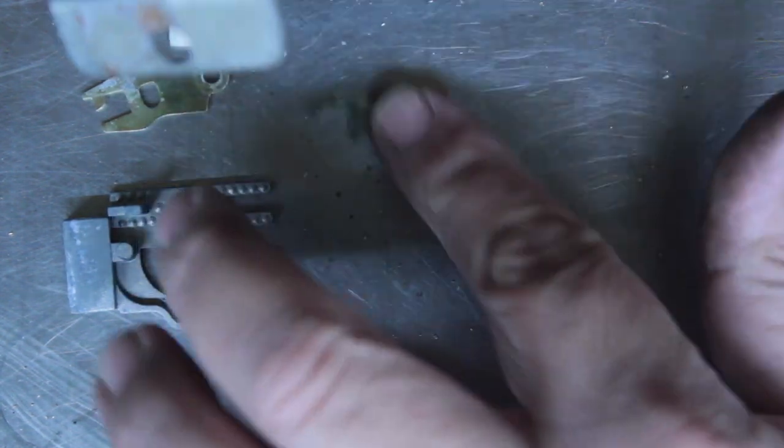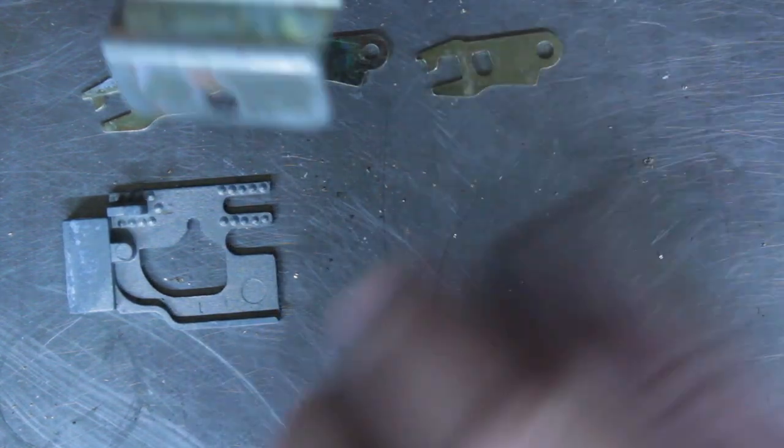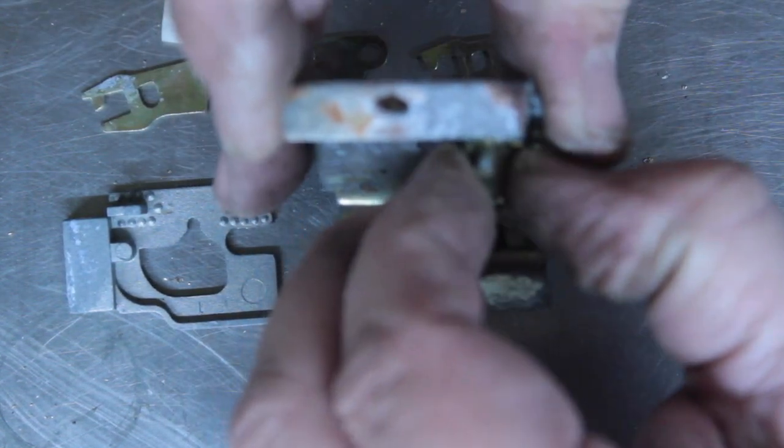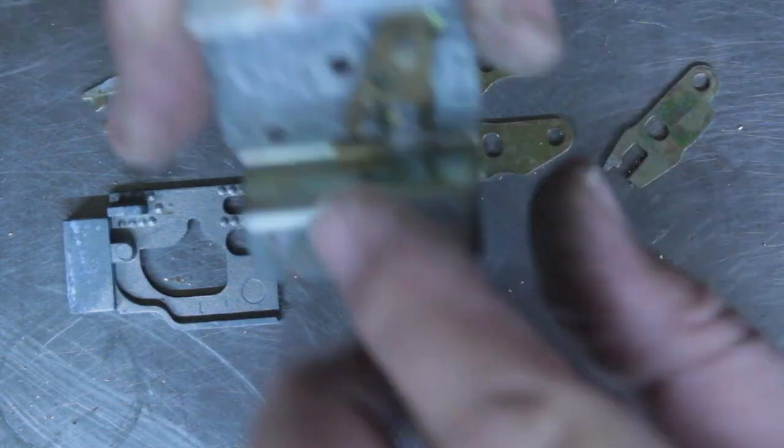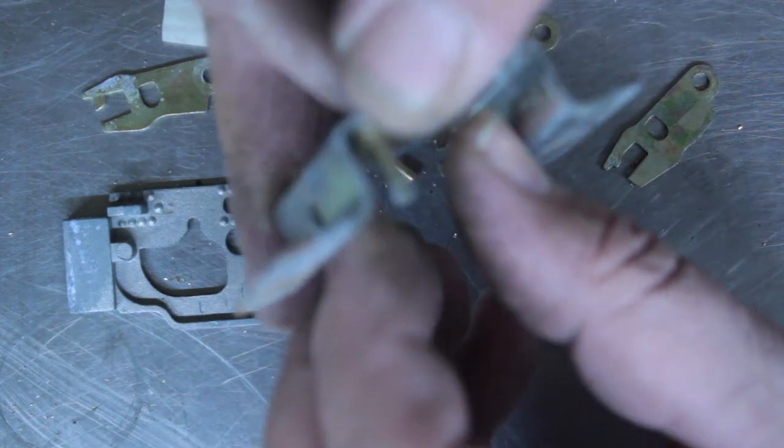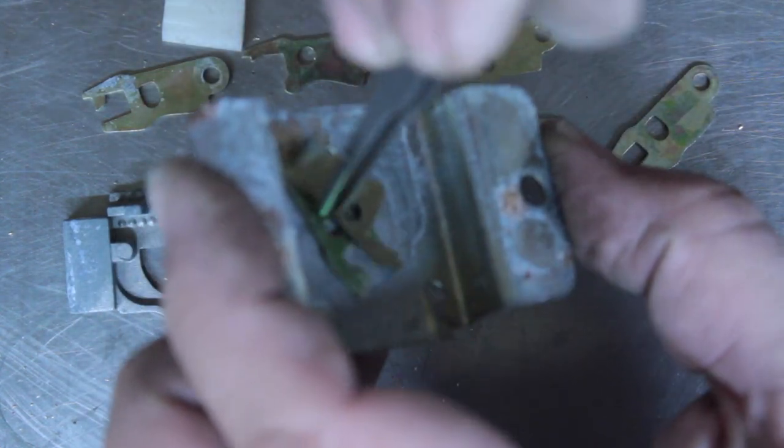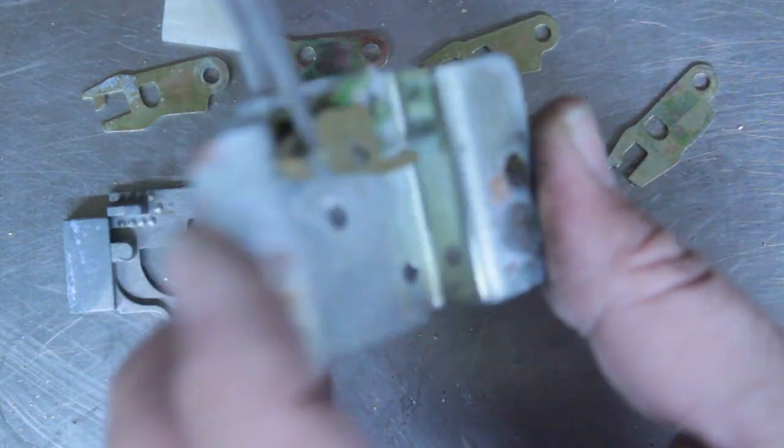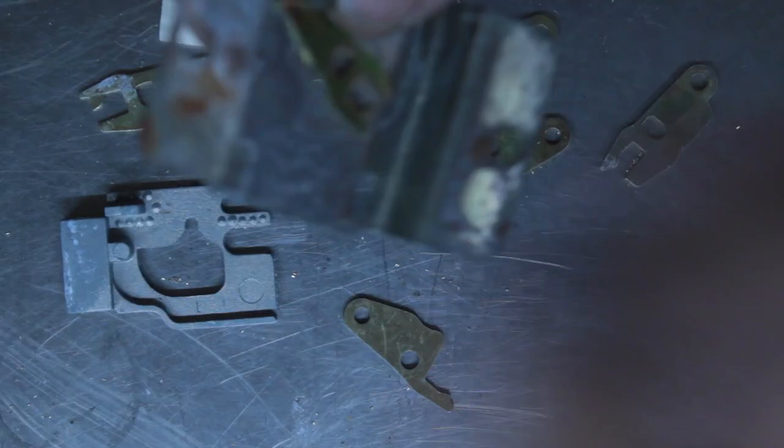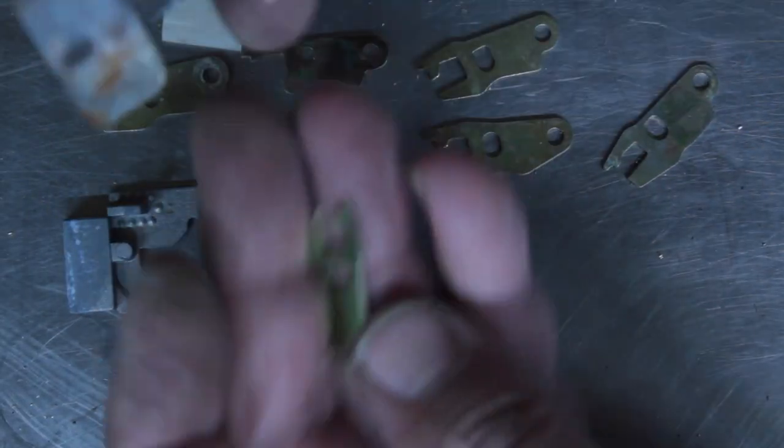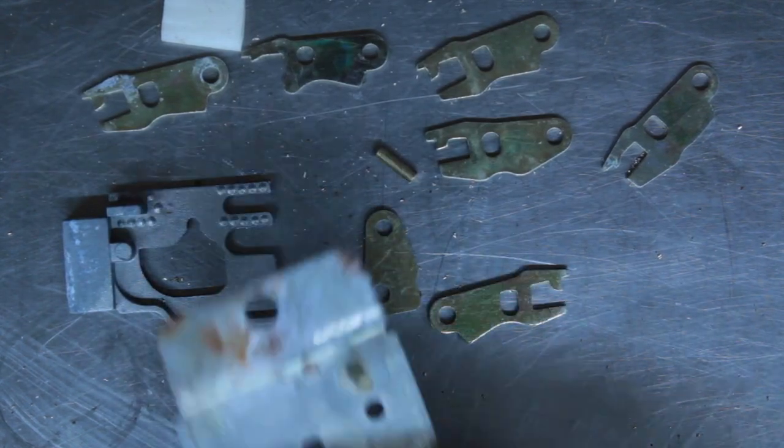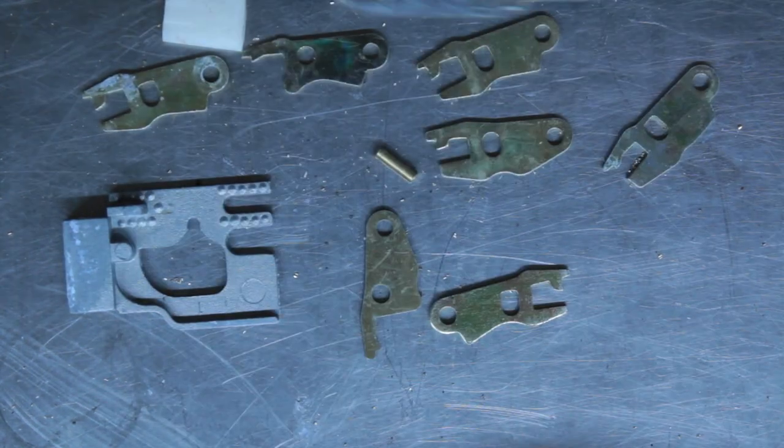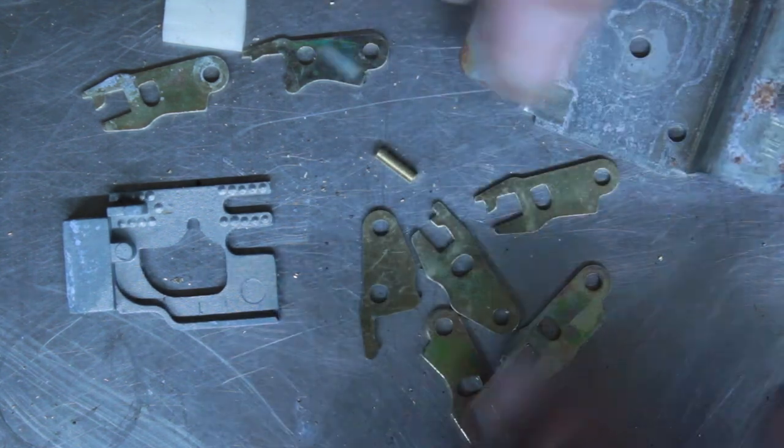There's a bit of surface rust on there, so I'm having a bit of trouble just pulling it apart. So there's all our levers, and a post. And another one. So that's it. That's the whole lock dismantled.